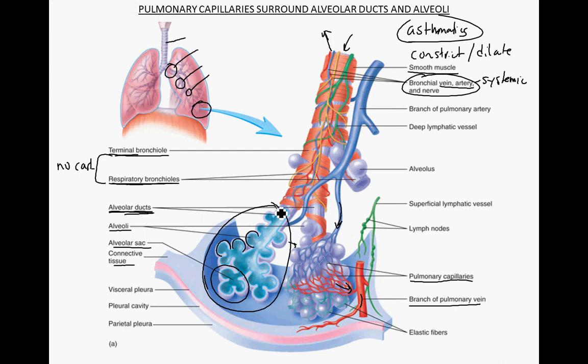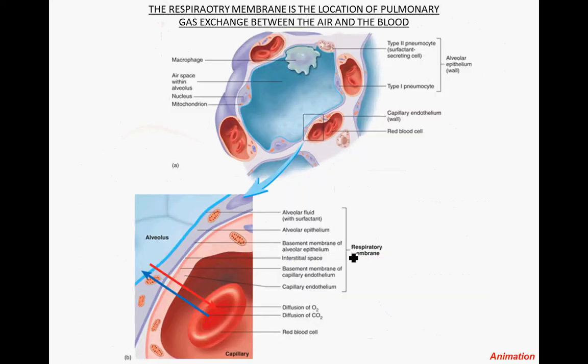Also associated with this are some lymph nodes, which play immune roles. They contain white blood cells, which makes sense because you're constantly inhaling bacteria, viral particles, and fungal spores. If they somehow get across the alveoli into the cells and tissues, you want to be able to detect that and mount an immune response.